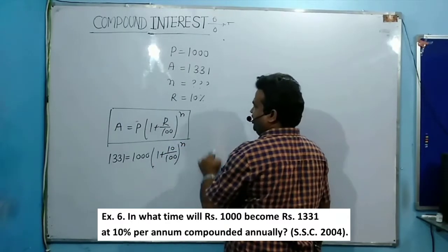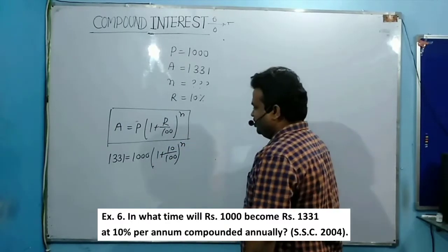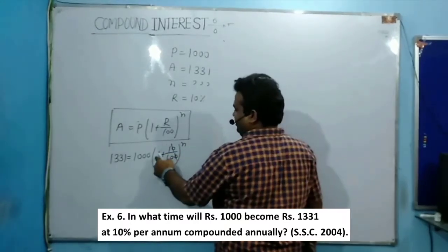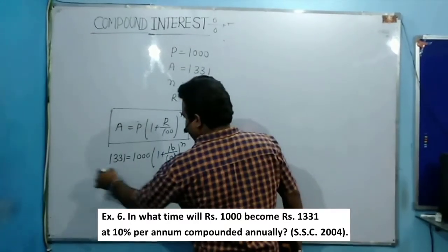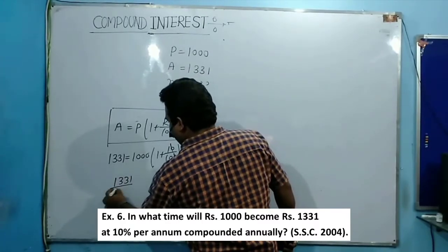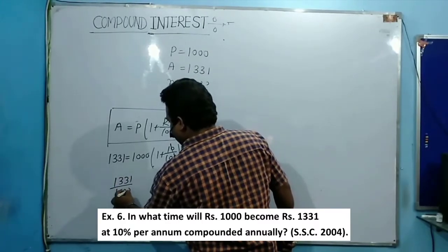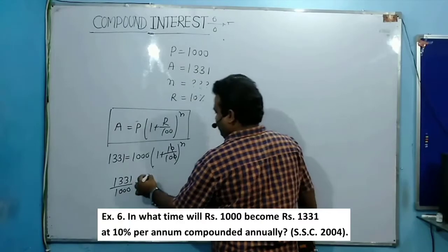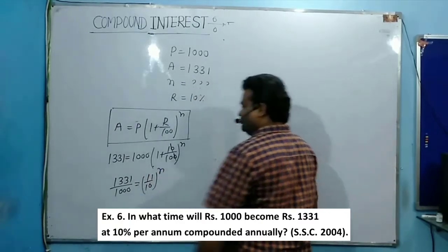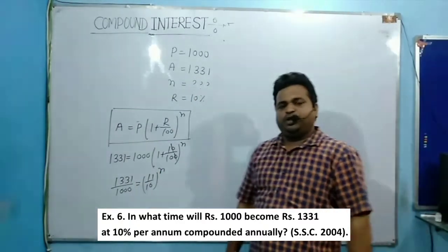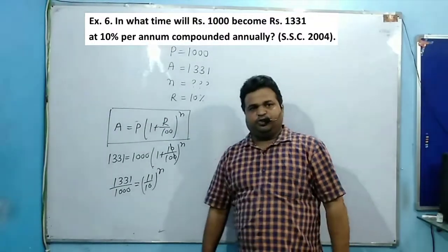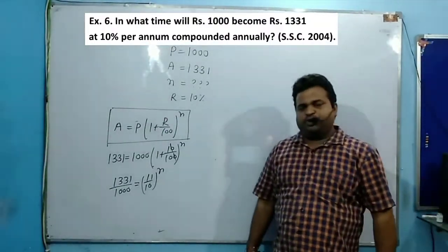Now simplifying: when we compute 1 + 10/100 we get 11/10. Dividing both sides, 1331 divided by 1000 is equal to (11/10) raised to the power n. Now the question is — if such a question comes, how do you calculate the value of n?